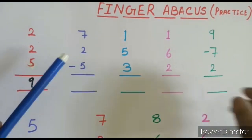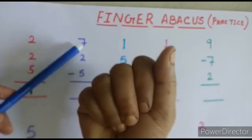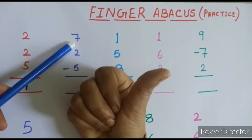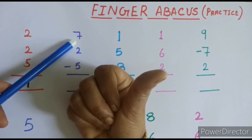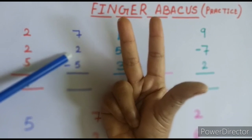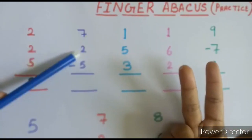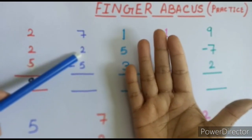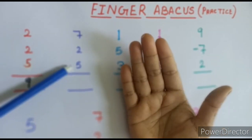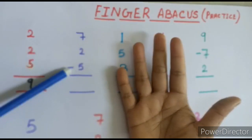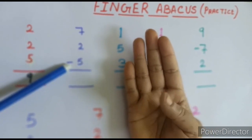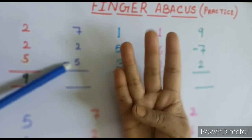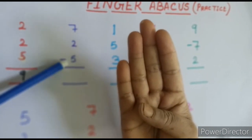Our next example: for 7, we know the thumb represents 5 — open the thumb, that is 5, then open 2 more fingers: 5, 6, 7. Then plus 2 means again open 2 fingers: we open our full hand. Then minus 5 — for subtraction you just close the fingers. For minus 5, we easily close our thumb. How many are left: 1, 2, 3, 4 — the answer is 4.